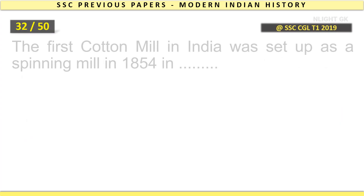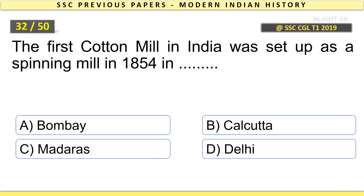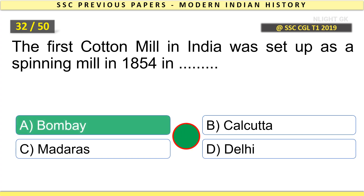The first cotton mill in India was set up as a spinning mill in 1854 in Bombay.